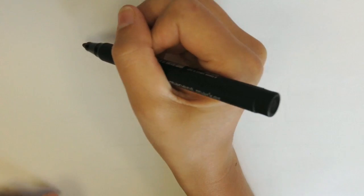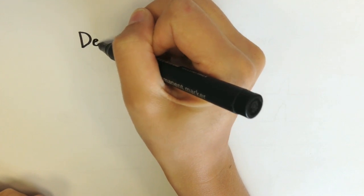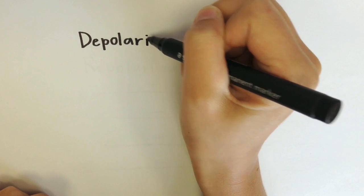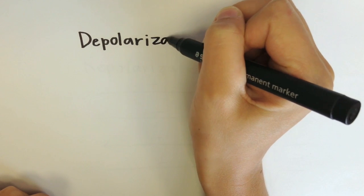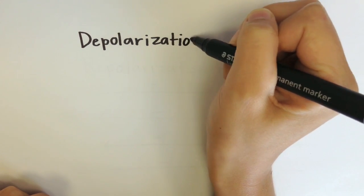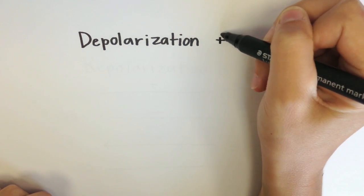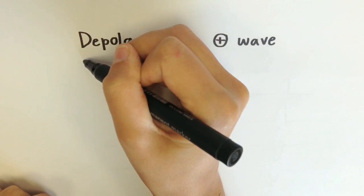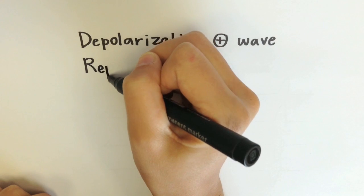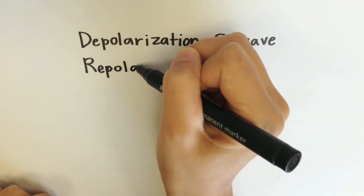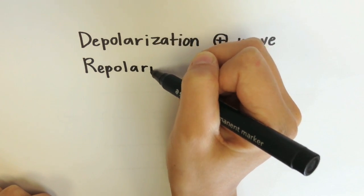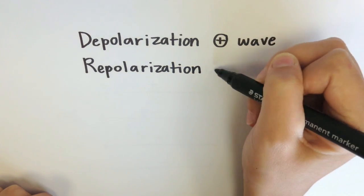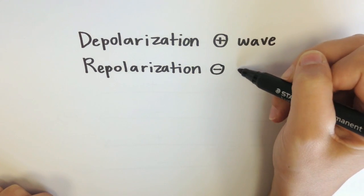Let's talk about the depolarization wave. Depolarization needs to happen before any contraction can happen. The depolarization wave is a positive wave. We also have the repolarization wave. Repolarization needs to happen before another depolarization can happen. The repolarization wave is a negative wave.